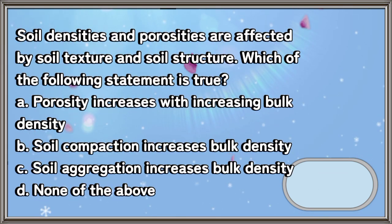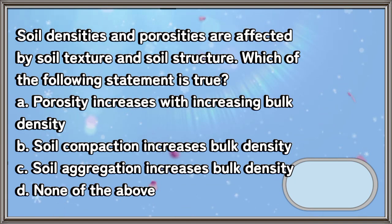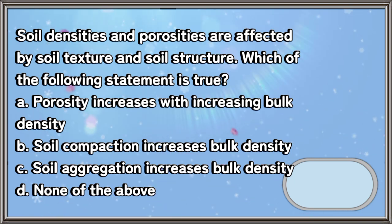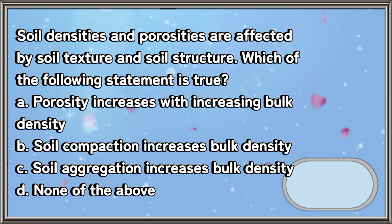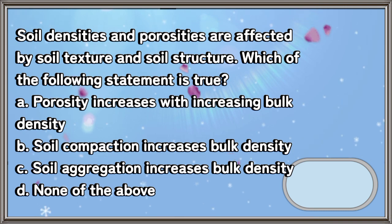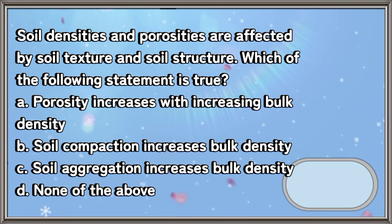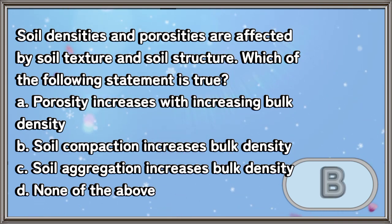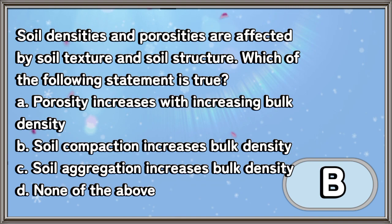Soil densities and porosities are affected by soil texture and soil structure. Which of the following statements is true? A. Porosity increases with increasing bulk density, B. Soil compaction increases bulk density, C. Soil aggregation increases bulk density, D. None of the above. The answer is letter B.